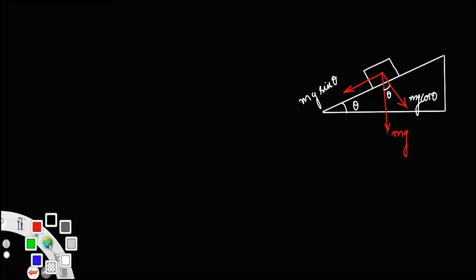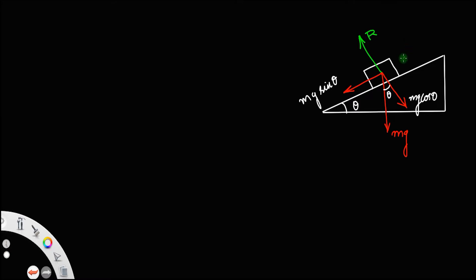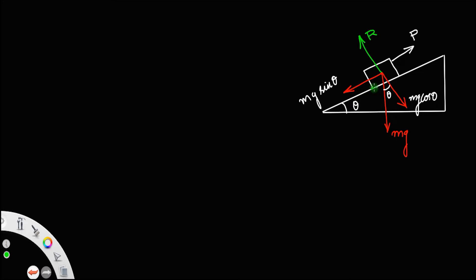There is also a reaction R acting perpendicular to the plane in the vertically upward direction. Since the body is moving upward — we are pushing the body in the upward direction — we apply a force P in this direction. Friction always opposes the motion, so there is a kinetic friction fk acting in the downward direction along the plane, since the body is moving.